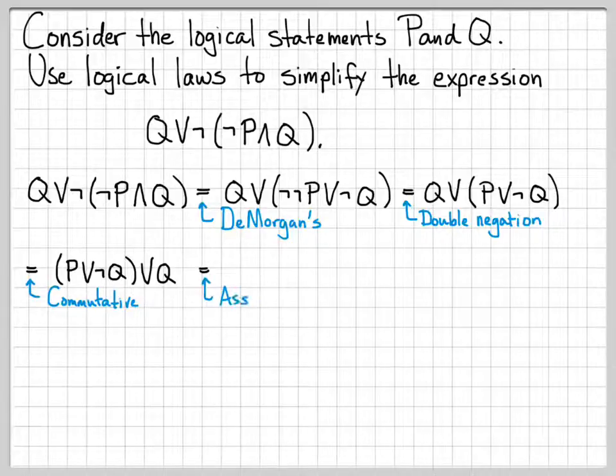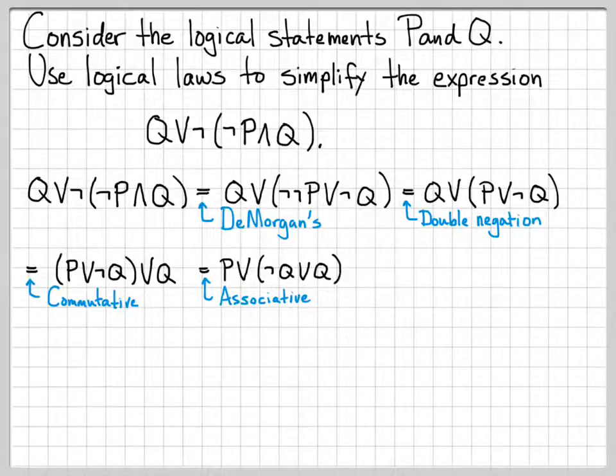Now I'm going to use the associative property. I have essentially here P or'd with not Q or'd with Q, so I can associate those differently. Instead of doing the quantity P or not Q and then oring that quantity with Q, I'm going to do P or'd with the quantity not Q or Q. So all I've done really is shifted the parentheses and associated a different group of things first. This is, by definition, the associative property.